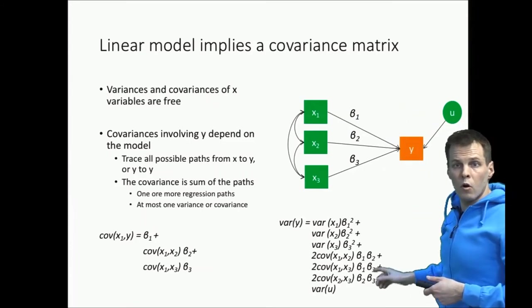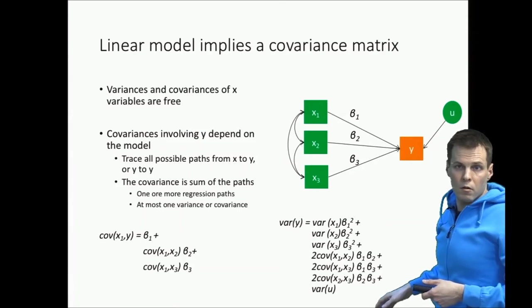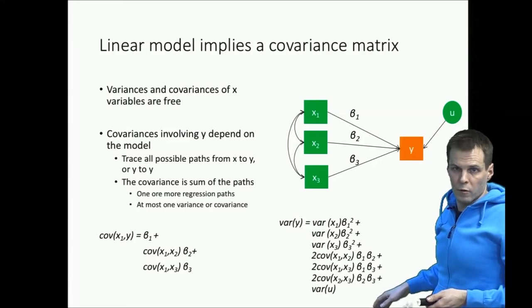This covariance form of the model implied correlation matrix rule is useful when you start working with more complicated models such as confirmatory factor analysis models.